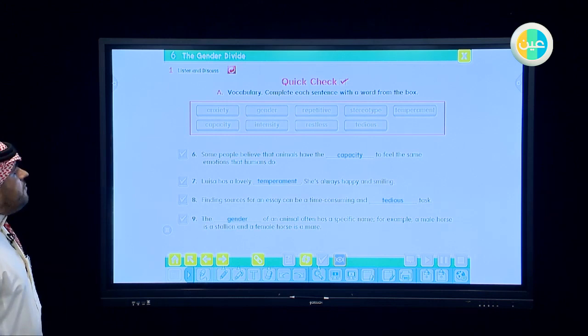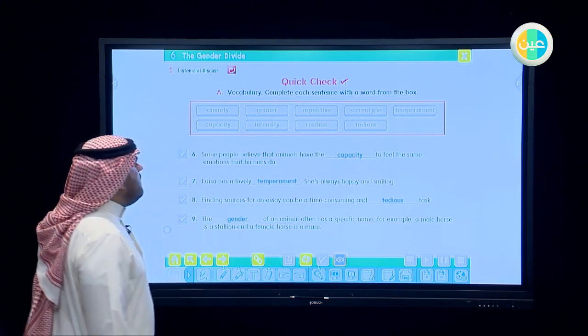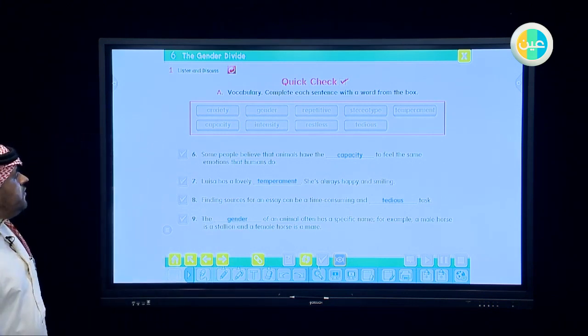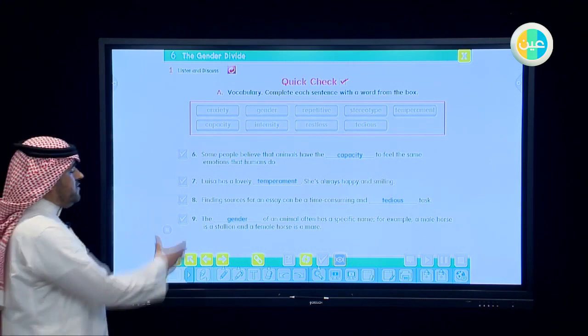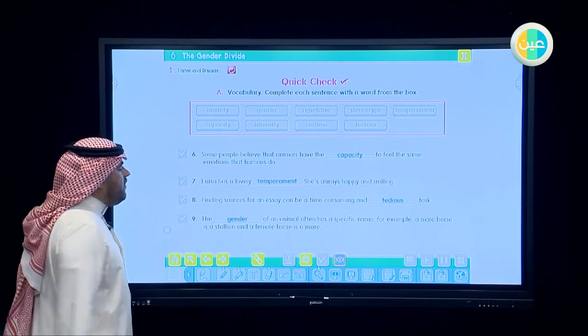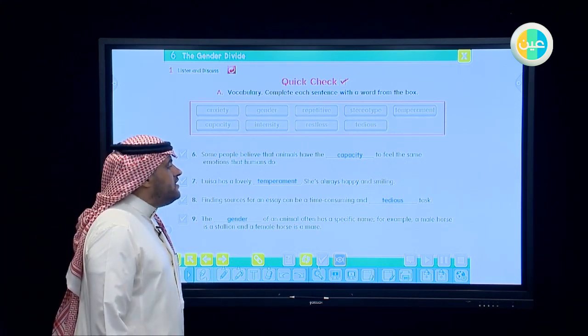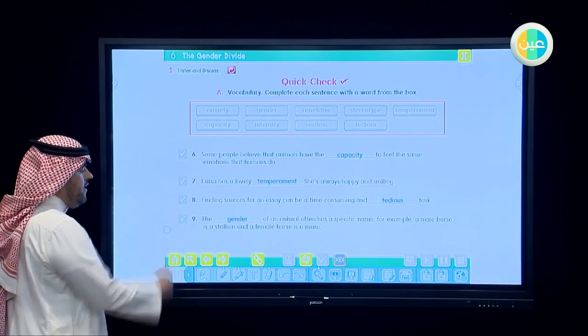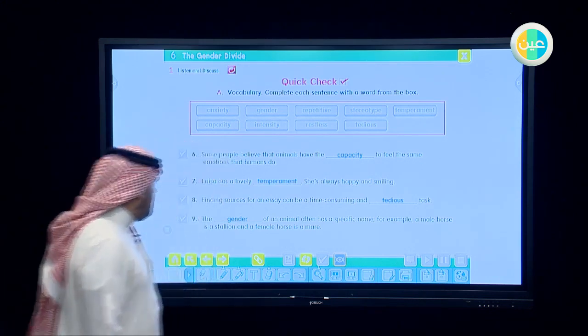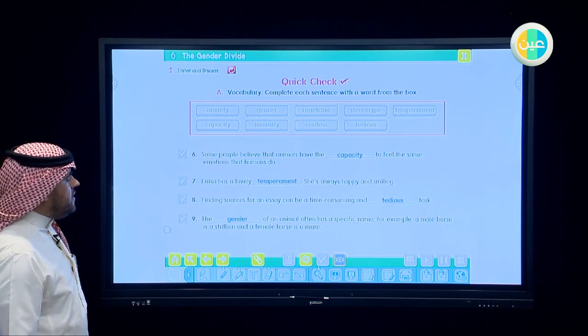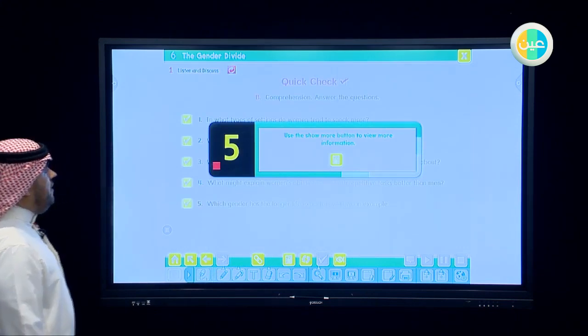We reviewed also the other vocabulary. Let's get the answer of six, seven, eight, and nine. Some people believe that animals have the capacity to feel the same emotions that humans do. Number seven, Louisa has the lovely temperament. She is always happy and smiling. That is her personality. Number eight, finding sources for an essay can be a time consuming and tedious task. Tedious. Number nine, the gender of animal often has a specific name. For example, a male horse is a stallion and a female horse is a mare. This is the exercise and let's go to the last section.